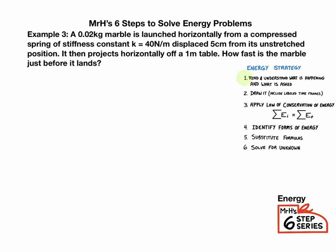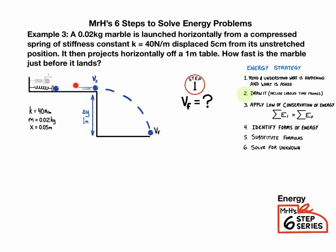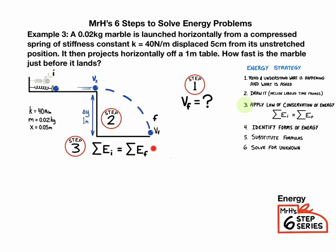Step one is to understand the question. In this case they're asking for how fast the marble was going, so we're done with step one when we have final velocity equals question mark. Step two is to draw a picture — make sure to label it with initial and final values. We start up where we had elastic potential energy, and finish just before hitting the ground when we have our final velocity. Step three: apply the law of conservation of energy — sum of all energy initial equals sum of all energy final.